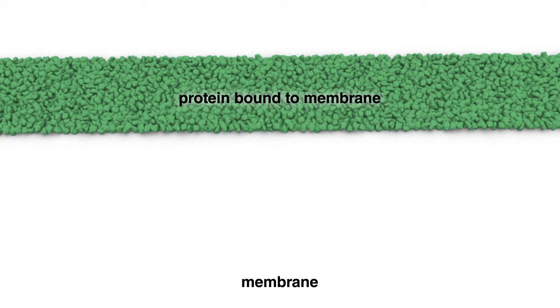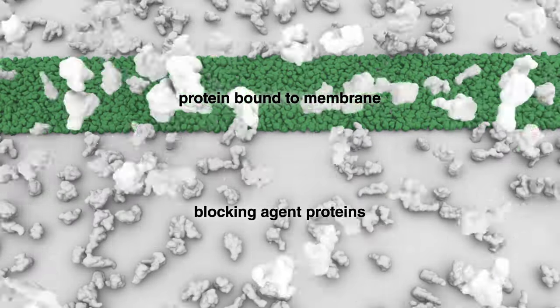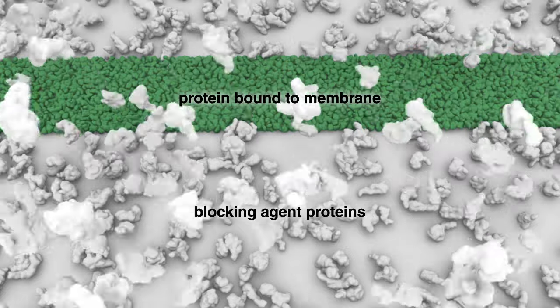Therefore, before antibodies are added to the membrane, it is important to minimize nonspecific antibody binding to the membrane. The membrane is incubated with a solution typically containing a blocking agent, such as dry milk or purified proteins, in a mild detergent.